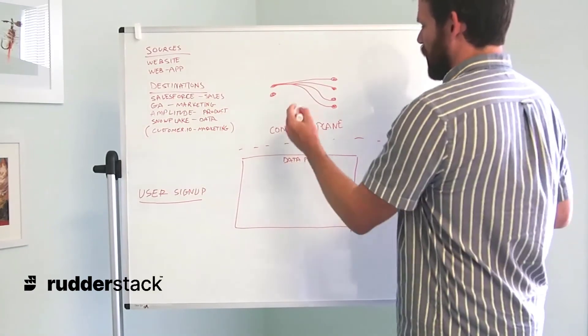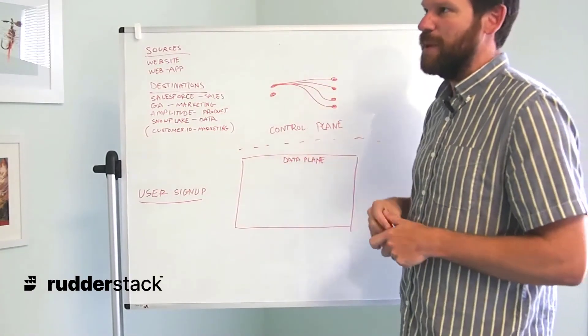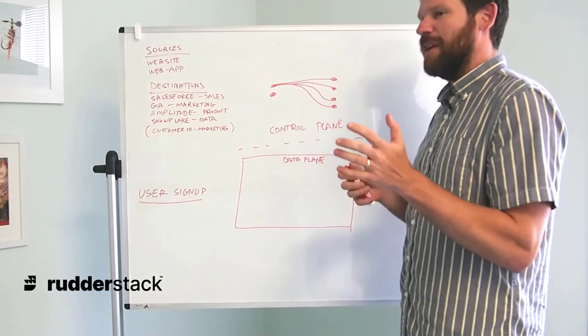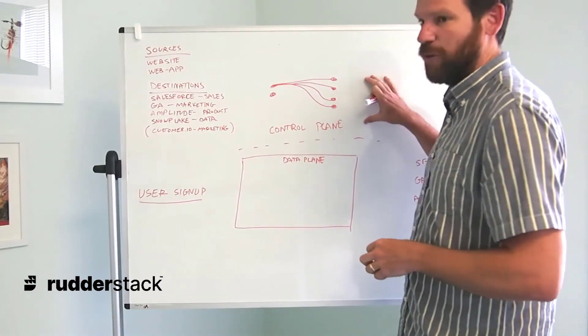The event streaming is going to be set up here. We're also going to have where we control our syncs. Our syncs are going to be how we manage events coming in from cloud extract and warehouse action sources, but we'll discuss that a little bit later. Those will be managed in your control plane as well.